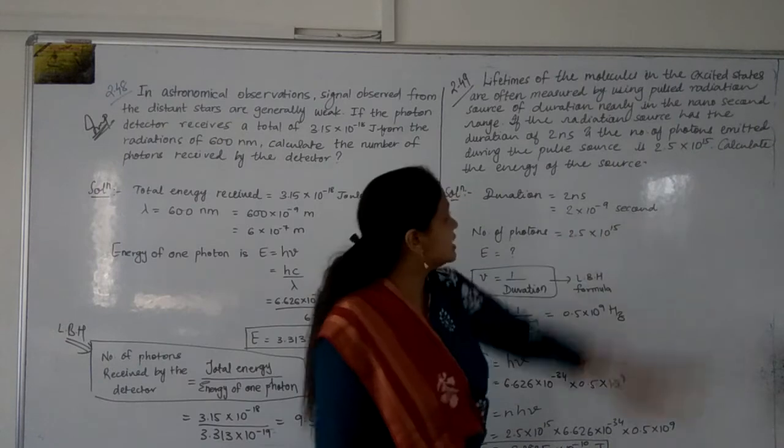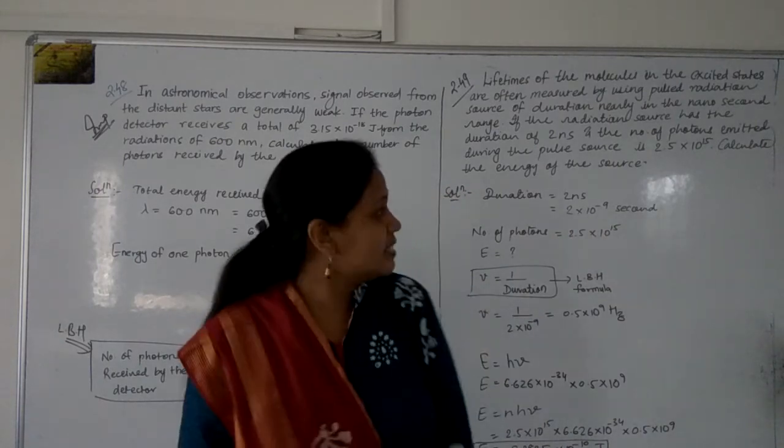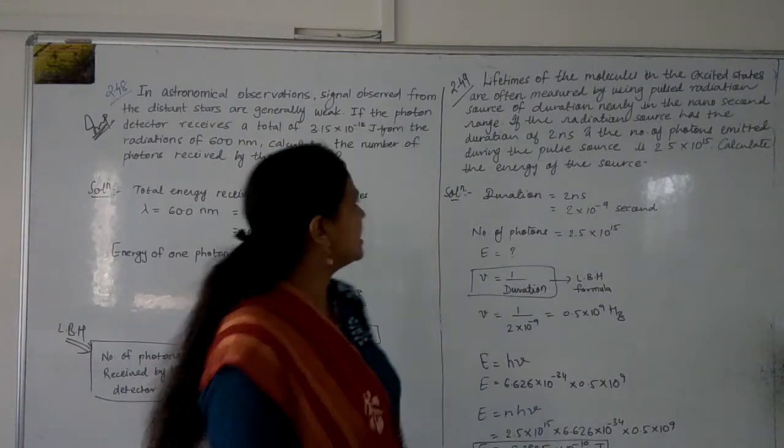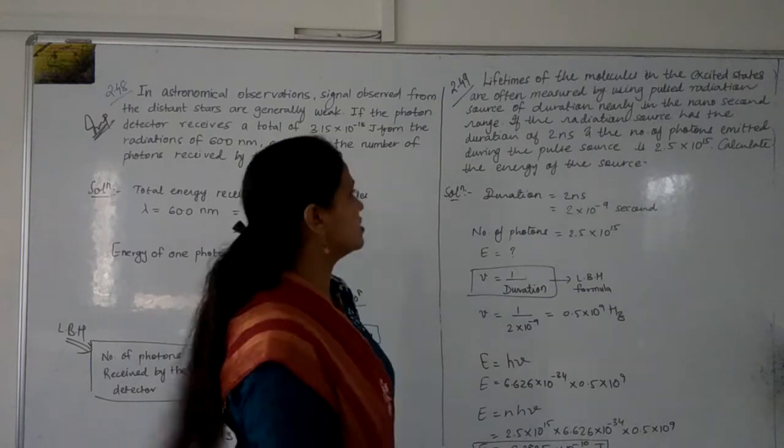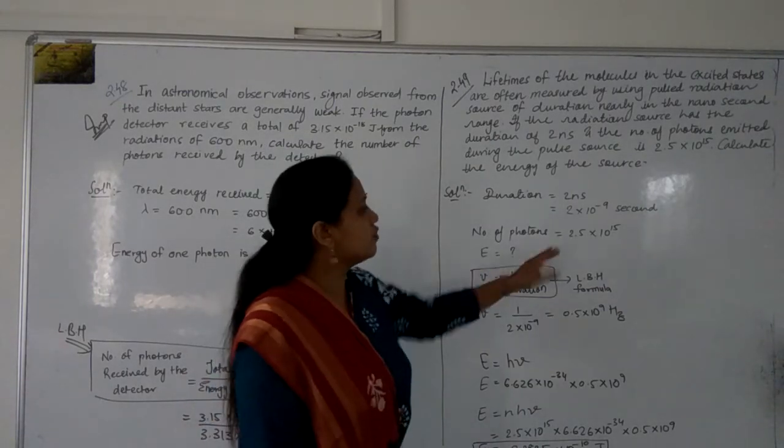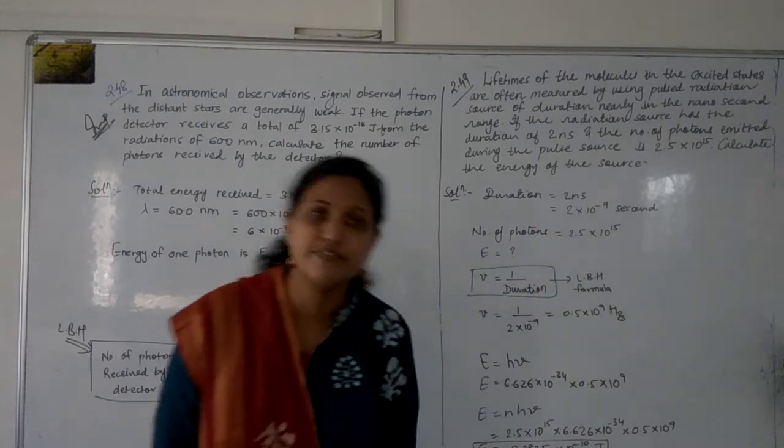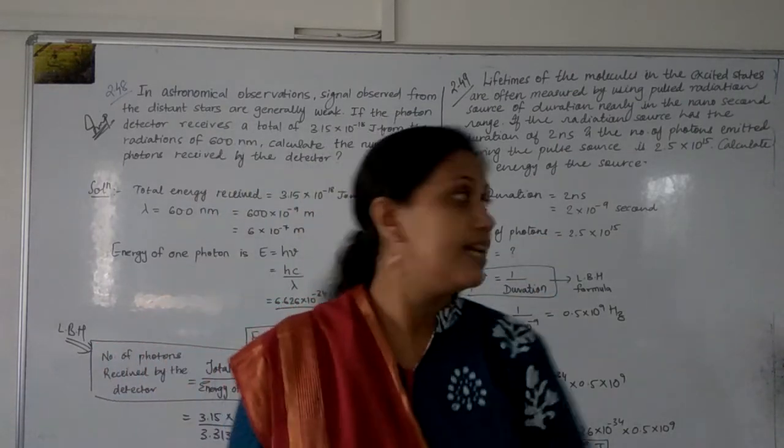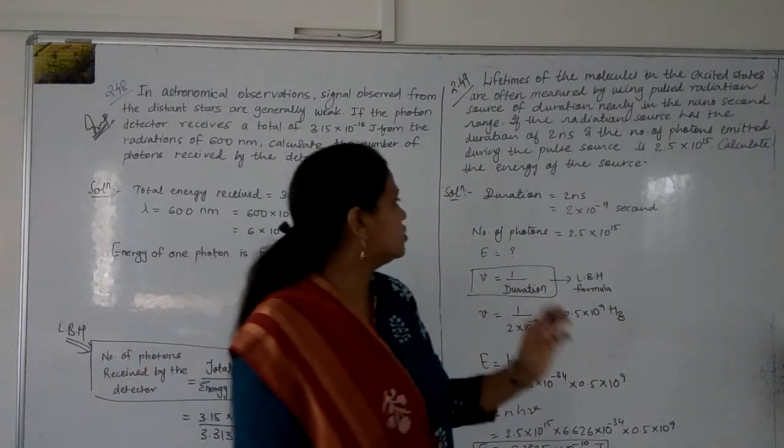So here I am turning to 10 to the minus 9 seconds. And the number of photons emitted during the pulse source is 2.5 into 10^15. So number of photons already given, it is 2.5 into 10^15. Calculate the energy of the source.